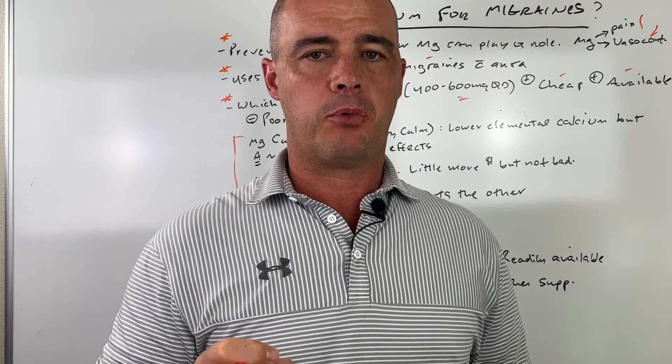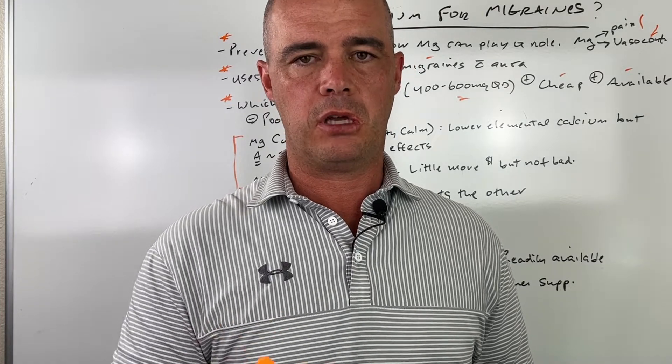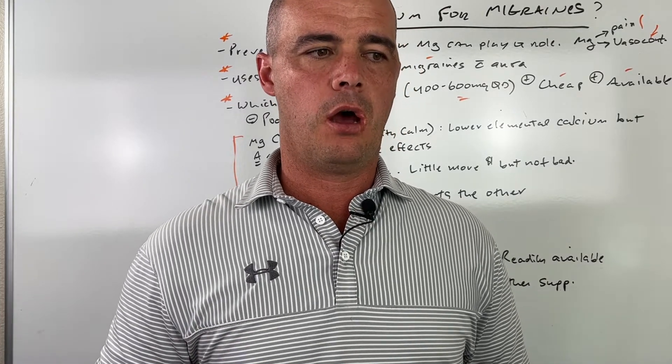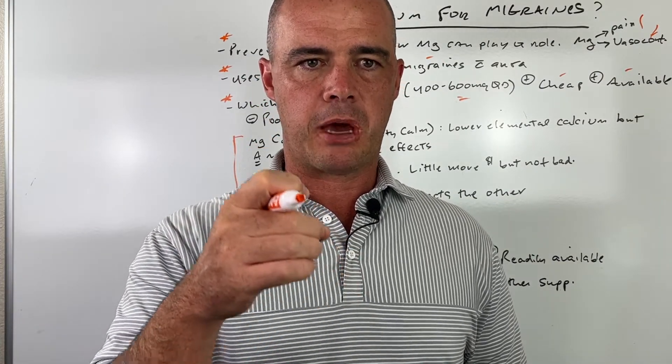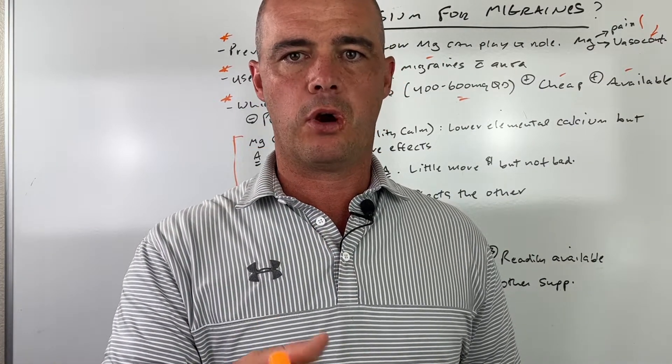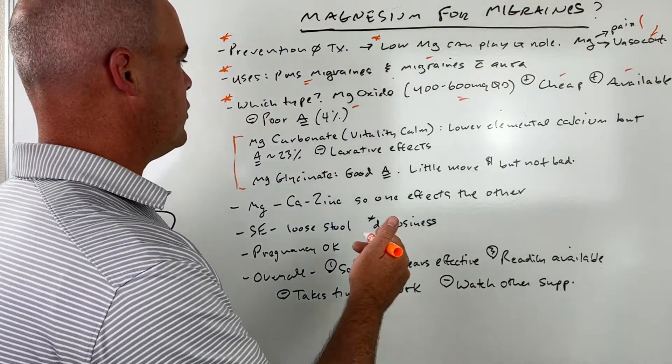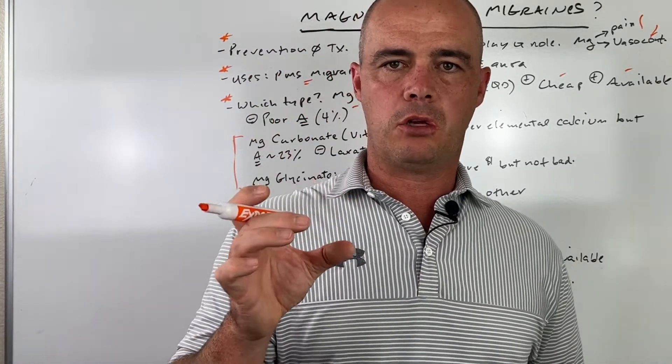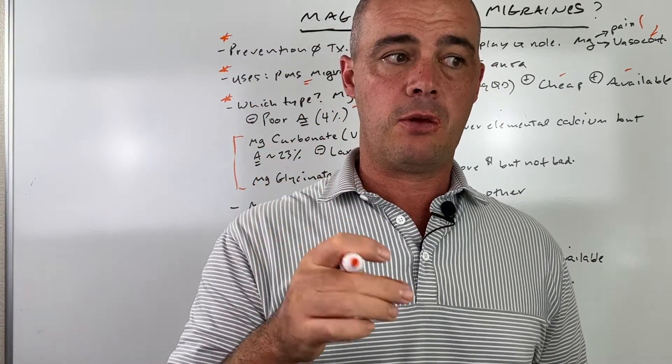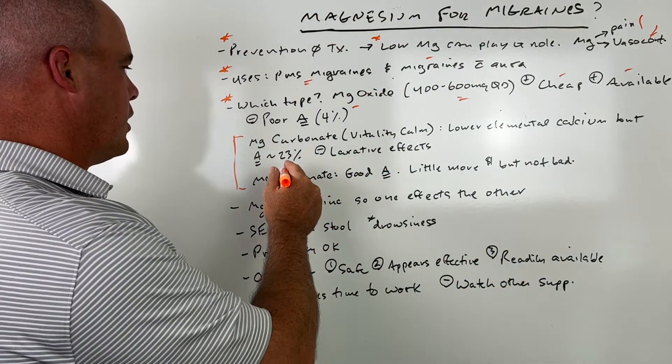I've talked before about a product I've used personally called Vitality Calm. I'll put a link to it in the description. Very good product. I use the powder. It's an effervescent powder. You just drop it in water before I go to bed and I'll take that to help with sleep. So it's magnesium carbonate. It doesn't have as much magnesium in the molecule itself, elemental magnesium, but it has a better absorption rate at around 23% of it being absorbed.